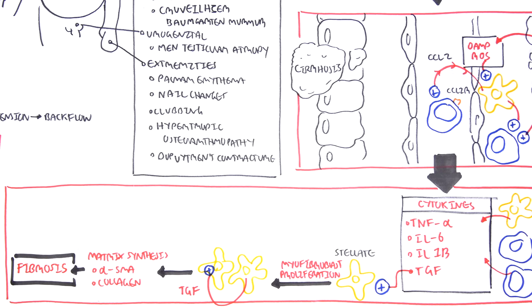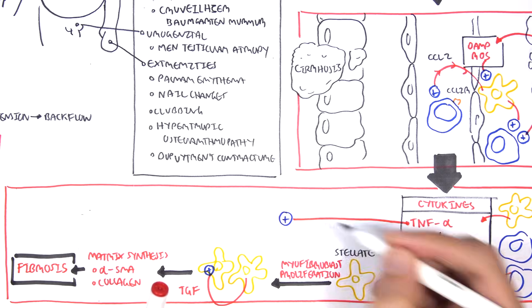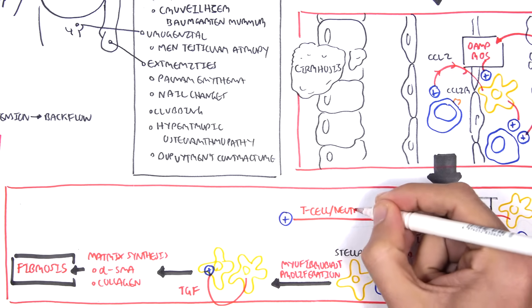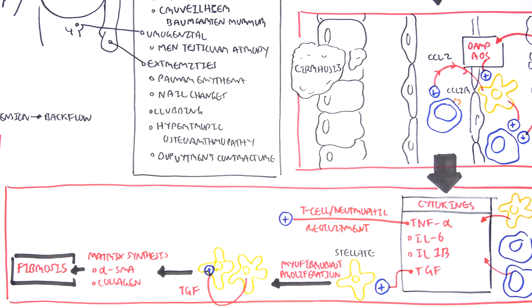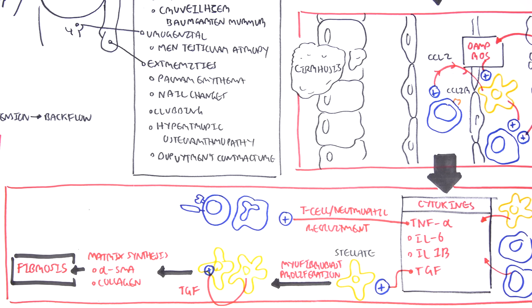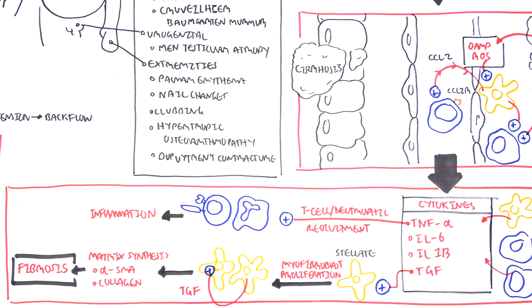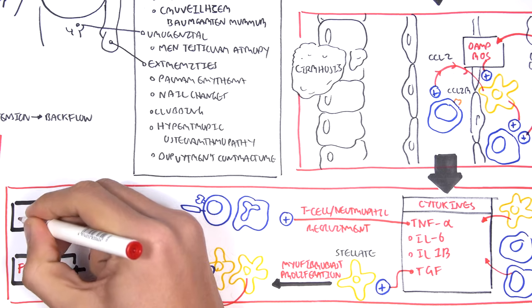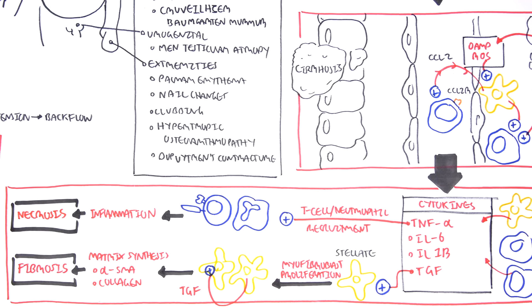Going back to the cytokines, the TNF-alpha and the other cytokines attract more neutrophils and T cells into the area. These T cells and neutrophils contribute to the inflammation early in liver damage, which will lead to necrosis and eventually the cirrhosis, the fibrosis.